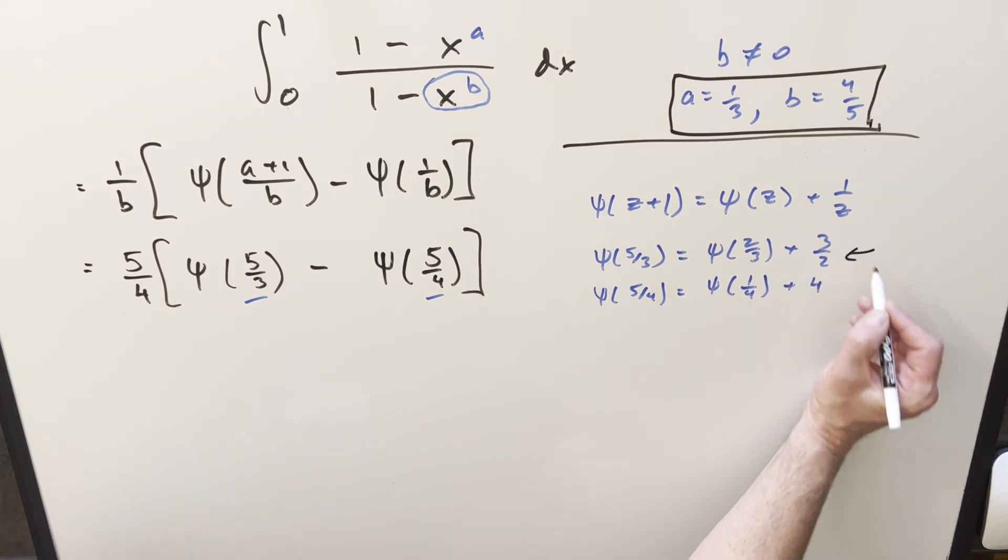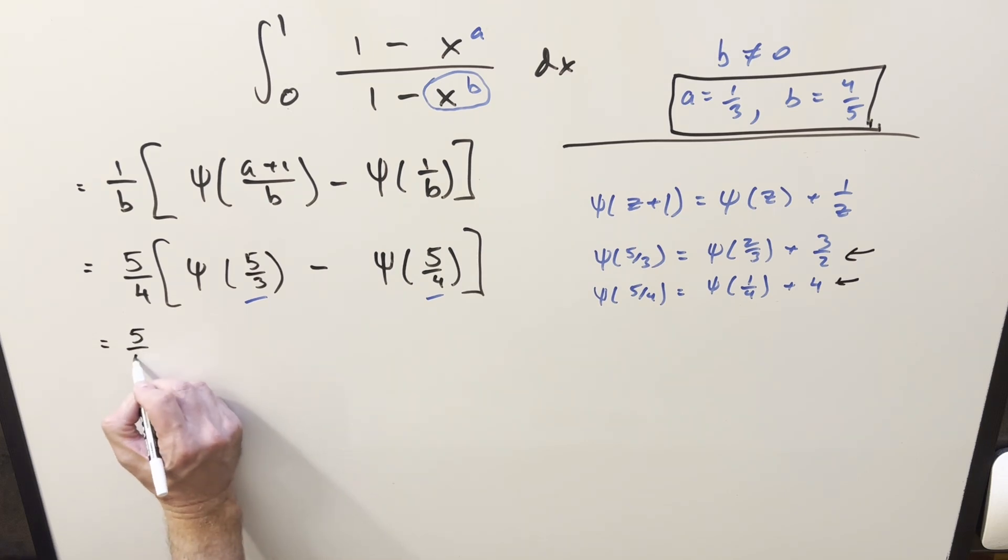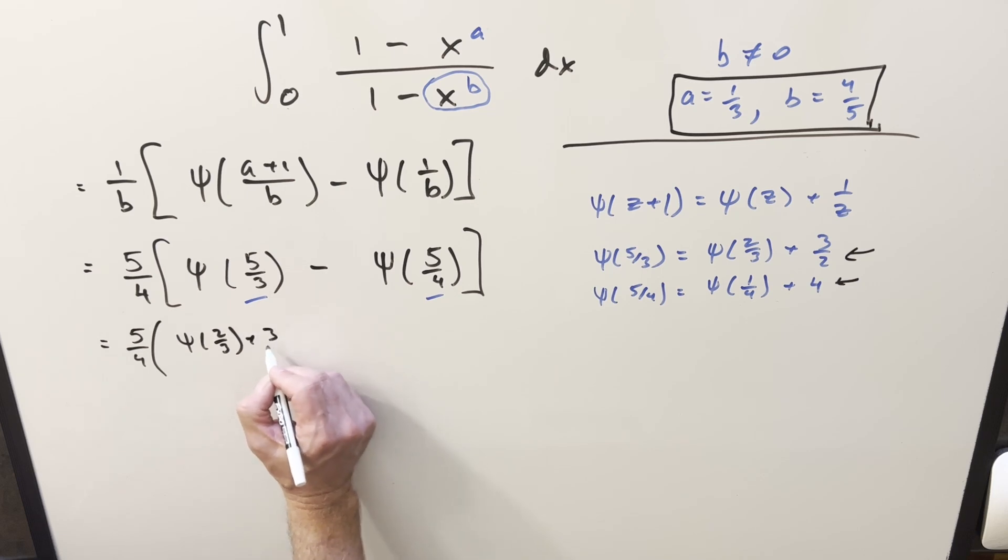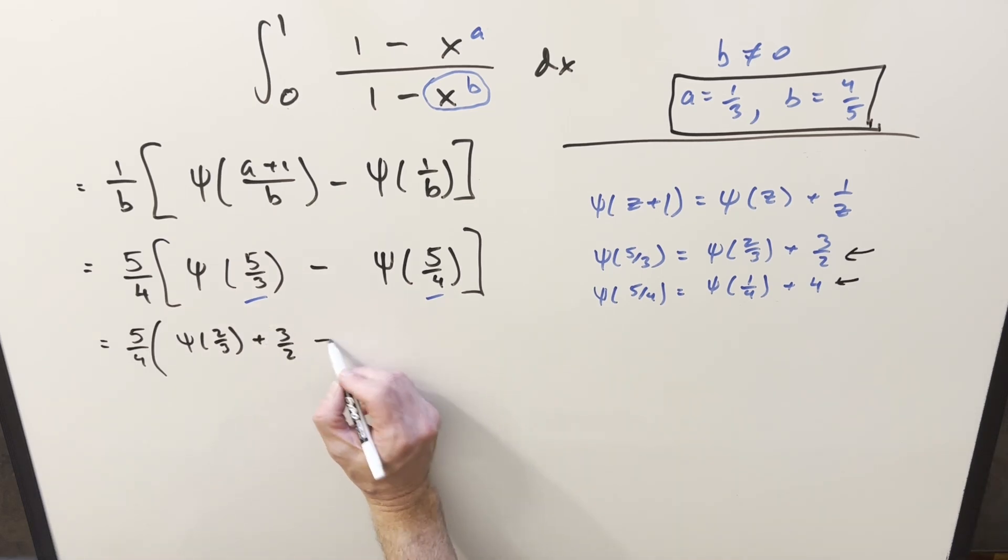So let's plug these two values in right here. We still got our 5/4 in front. This is going to become digamma of 2/3 plus 3/2. Distributed in the minus sign, we have minus digamma of 1/4 minus 4. But now in order to try to get this to a numeric value, we want a value for digamma of 1/4 and digamma of 2/3.